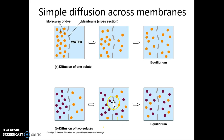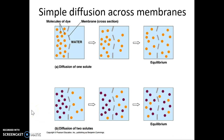Eventually we'll get an equal number of purple dots on the left and right, and an equal number of orange dots on the left and right. Note how each solute — the orange and the purple — had its own concentration to start with, and they both reach equilibrium independently of each other. The number of purple dots has no effect on how the orange dots move.